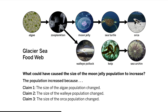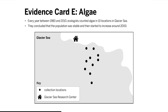How does the remaining evidence support or go against these claims? Claim 1: The size of the algae population changed. Claim 2: The size of the walleye population changed. Claim 3: The size of the orca population changed. Now focusing on Claim 1: The size of the algae population changed.